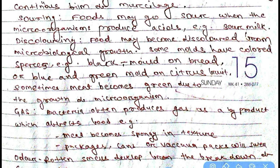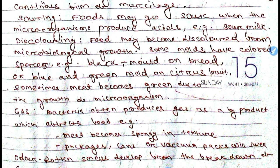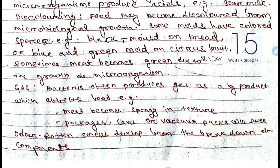Another type of food spoilage is gas production. Bacteria often produce gas as a byproduct of their metabolism, which affects the food. Meat becomes spongy in texture due to this gas. Additionally, packages, cans, or vacuum packs will swell and their regular shape will change, as bacteria create gas from inside the can.